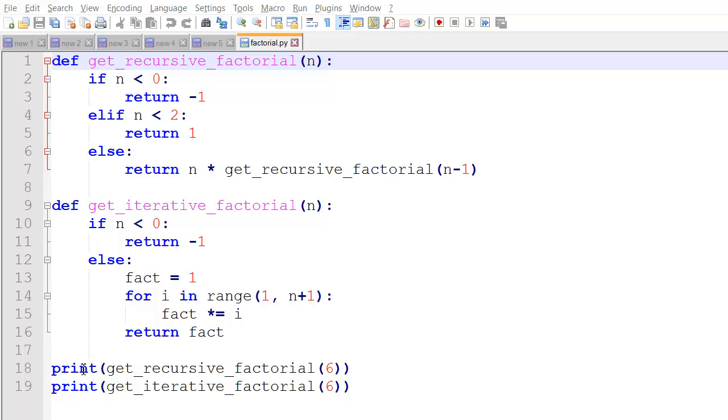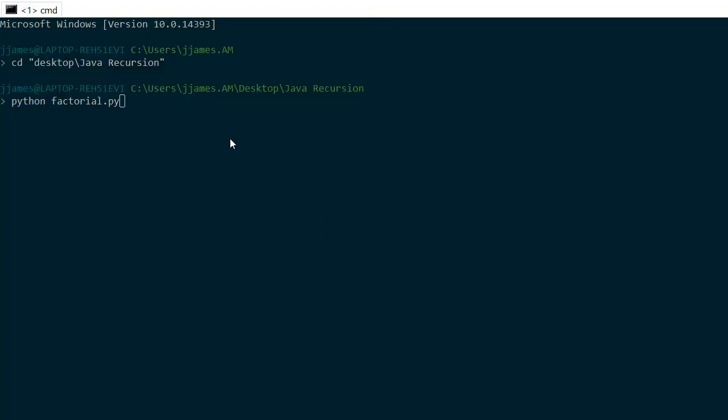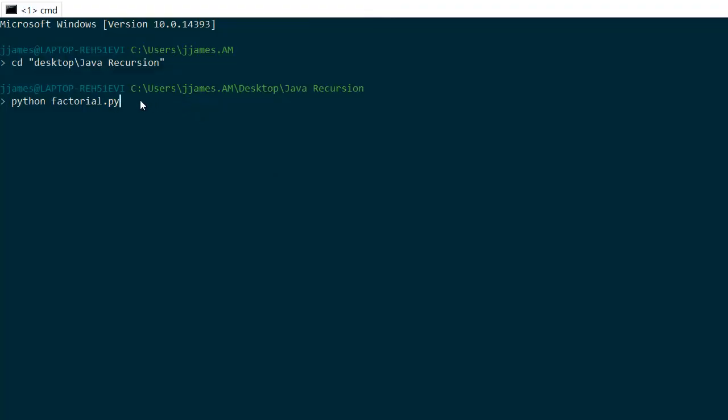We have two print statements. One print statement to get the recursive factorial of six, and one to get the iterative factorial of six. So let's run that and see how it runs. So with the command prompt, we'll type python. Factorial.py is the name of our program. We run that, and we get 720 back for both of the two methods. They return the same value. So that's as we expected.